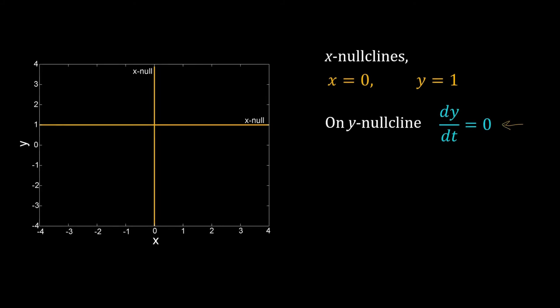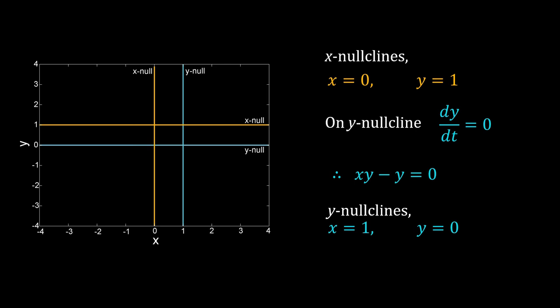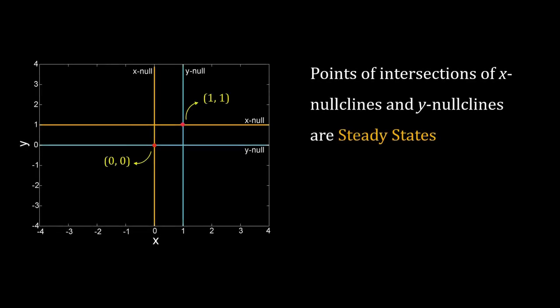Similarly, by setting dy/dt equal to 0, we get the y nullcline. The y nullclines are x = 1 and y = 0. The point of intersection between an x nullcline and a y nullcline is a steady state.